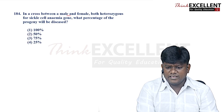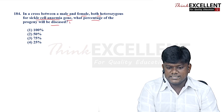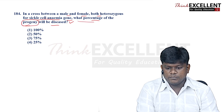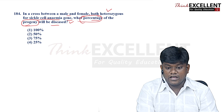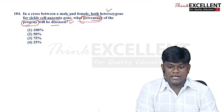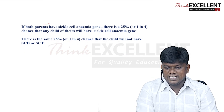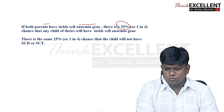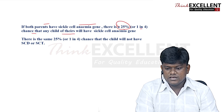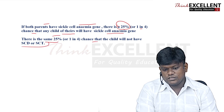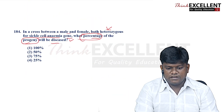Question 184: in a cross between a male and female both heterozygous for sickle cell anemia gene, what percentage of the progeny will be diseased? Heterozygous parents (carriers) produce a 1:2:1 ratio. There is a 25% chance any child will be homozygous affected (diseased). Option 4 — 25% — is the right answer.